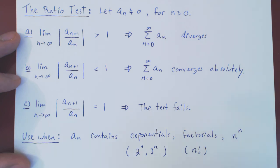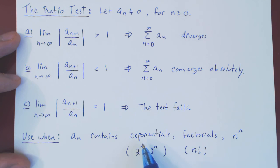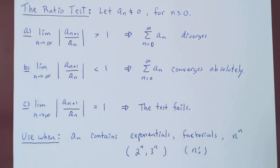So always keep this in mind: use the ratio test when parts of your sequence contain an exponential and/or a factorial and/or an n to the n term. And that's it.